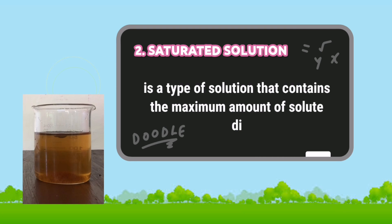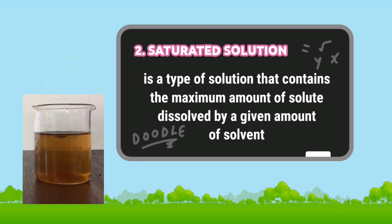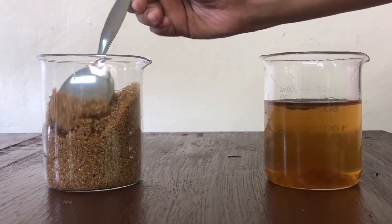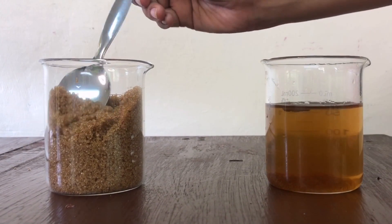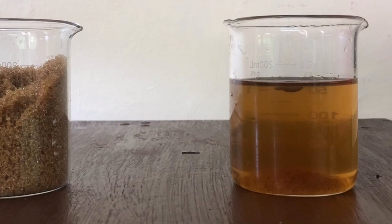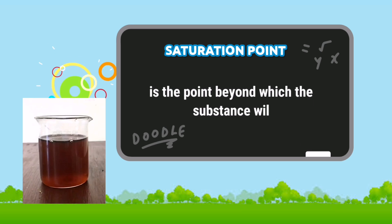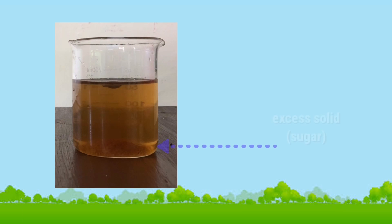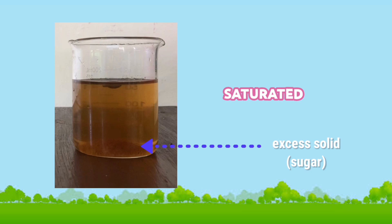Saturated solution is a type of solution that contains the maximum amount of solute dissolved by a given amount of solvent. If you add more solute to the solvent, it will no longer dissolve because the solution has reached its saturation point. Saturation point is the point beyond which the substance will no longer dissolve in the solution. The presence of an excess solid which can no longer dissolve is evidence that the solution is saturated, thus becoming supersaturated.